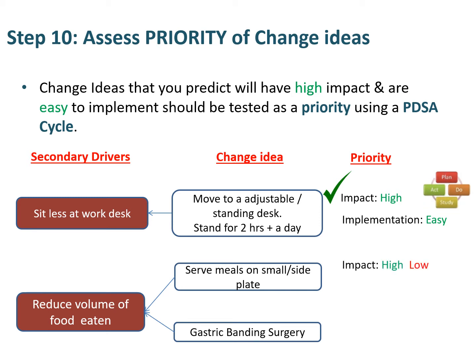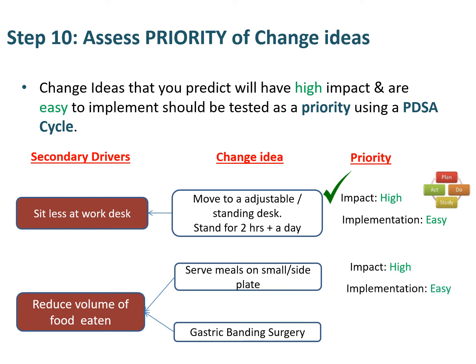The next change idea is David serving his meals on a small side plate and halving the volume of food. The impact on him losing weight — we felt that would have high impact. For implementation, we felt that would be easy to do because everyone has small side plates. Sticking to it would be quite a hard concept, but to implement it would be quite easy. So again, that is something that David would test early on in a PDSA cycle.